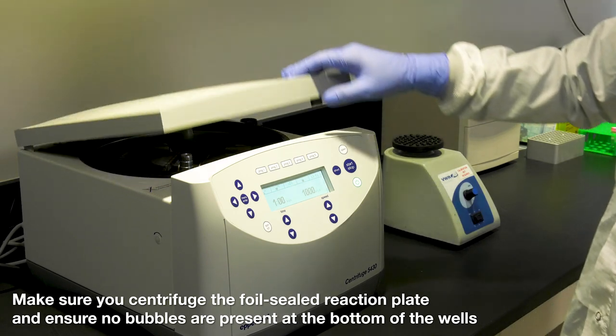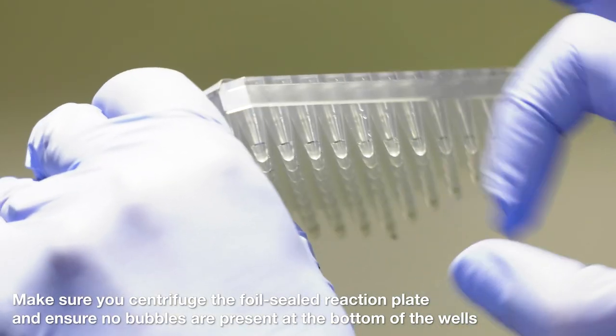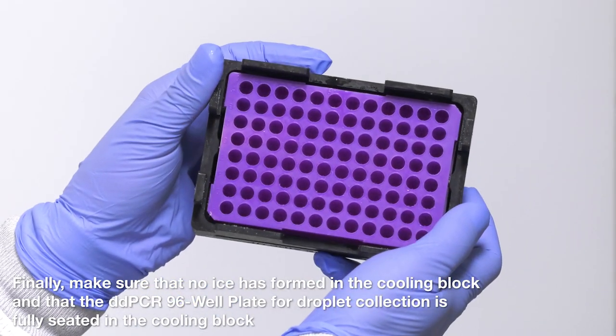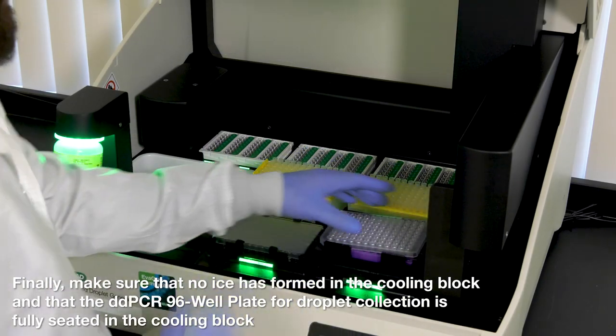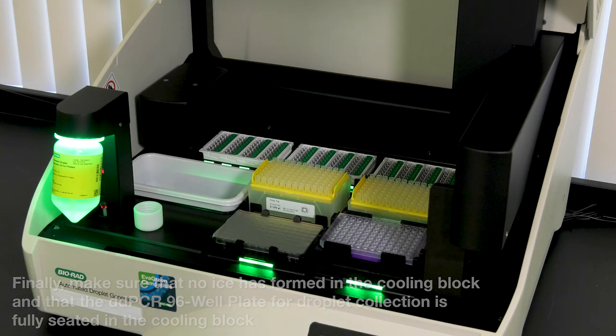Make sure you centrifuge the foil sealed reaction plate and ensure no bubbles are present at the bottom of the wells. Finally, make sure that no ice is formed in the cooling block and that the DD-PCR 96 well plate for droplet collection is fully seated in the cooling block.